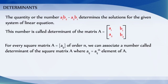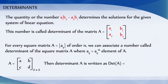For every square matrix A equal to [aij] of order n, we can associate a number called the determinant of the square matrix A, where aij is the (i,j)th element of A. If A is a 2×2 square matrix with elements a, b, c, d, then determinant of A is written as det [a, b; c, d]. For matrix A, determinant of A is read as 'determinant of A' and not 'modulus of A'.